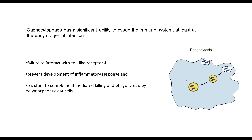Capnocytophaga has a significant ability to evade the immune system, at least at the early stages of infection. It may not interact with toll-like receptor 4, which is an essential part of our innate immune system. It also resists complement-mediated killing and phagocytosis, and prevents the development of an inflammatory response.